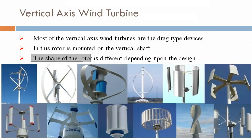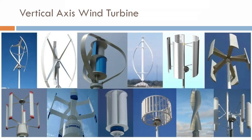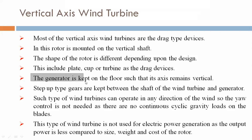The shape of the rotor is different depending upon the design. This includes plate, cup, or turbine as the drag devices. The generator is kept on the floor such that its axis remains vertical. Plate, cup, or turbine are used as drag devices.